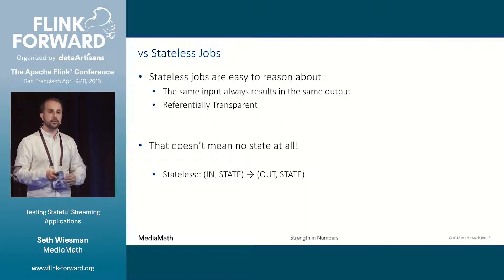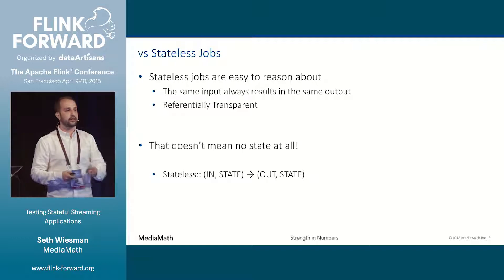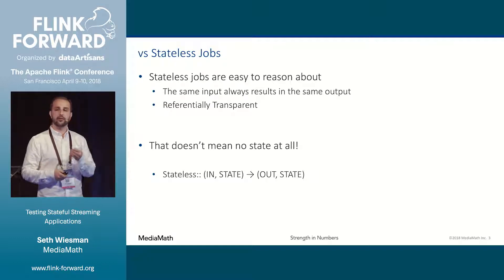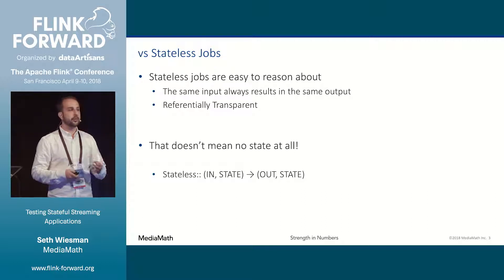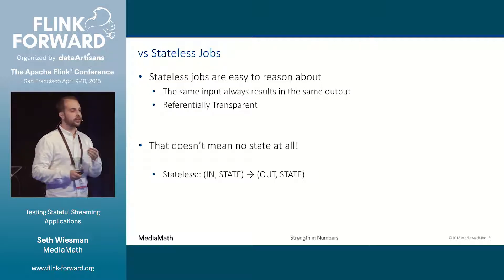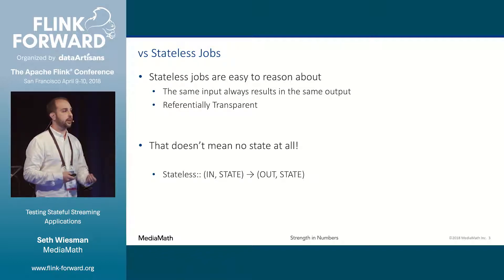Contrast that with something that's stateless, where the same input always results in the same output — also known as being referentially transparent. This is the easiest type of code to reason about because it does not depend upon the context in which it's run. Something that works in development is going to behave the same way in production. That is not to say referentially transparent code cannot have state, but simply that its state is explicitly passed through the application, making it easy to reason about and test.